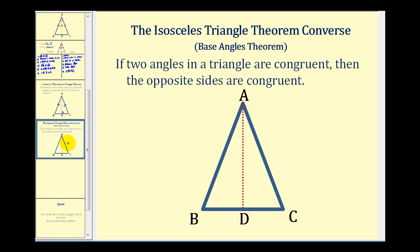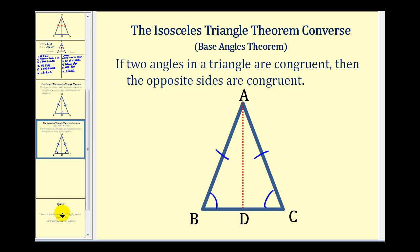I do want to finish by stating the isosceles triangle theorem converse, sometimes called the base angles theorem. If two angles of a triangle are congruent — for example, if angle B is congruent to angle C — then the opposite sides are congruent, so segment AB is congruent to segment AC. Again, this is the converse of the isosceles triangle theorem. I hope you found this video helpful.